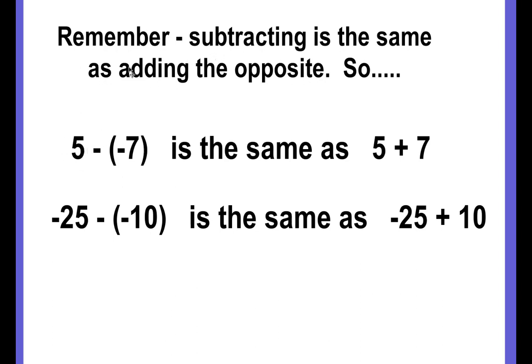So if you have the problem 5 minus a negative 7, that's the same as saying 5 adding the opposite of negative 7, which is a positive 7, so it becomes 5 plus 7. Negative 25 minus a negative 10 is the same as saying negative 25 plus the opposite of negative 10, which is a positive 10. Do you see what's going on here? Each time we subtracted a negative, that integer turned into a positive number.